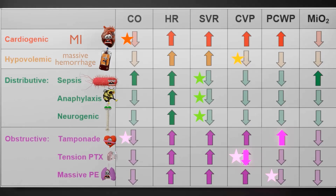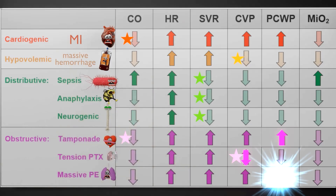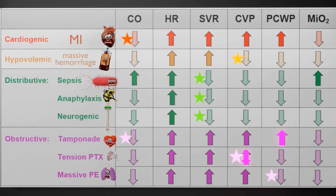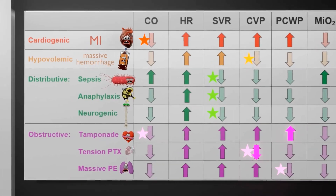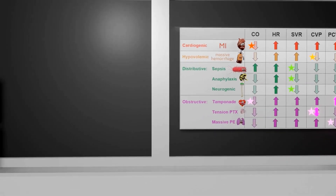Last but not least, massive PE. The parameter to focus on in PE is pulmonary capillary wedge pressure — it will be reduced. There's an embolism in the pulmonary artery blocking blood from getting back to the heart, so PCWP will be reduced and that leads to everything else. Cardiac output will be reduced because there's not enough preload since blood is blocked up in the lungs. There will be a compensatory increase in systemic vascular resistance and heart rate — that's why in massive PE we see tachycardia.